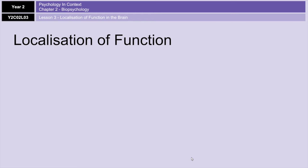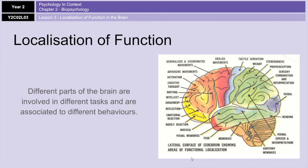So, localization of function — what is it? It's essentially the idea that different parts of the brain are involved in different tasks and are associated with different behaviors. The opposite of localization of function is something called holism, which is the belief that the whole brain is implicated in behaviors and functions. Localization of function means that tasks and behaviors are dealt with by specific areas in the brain.